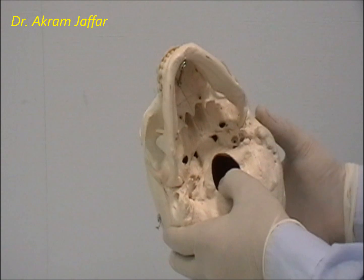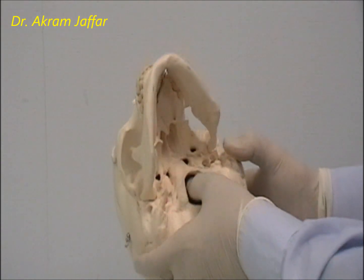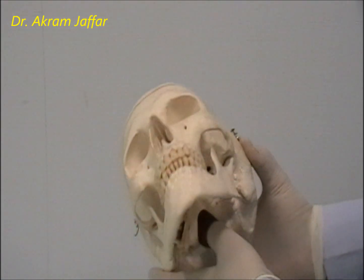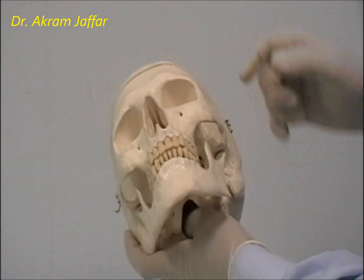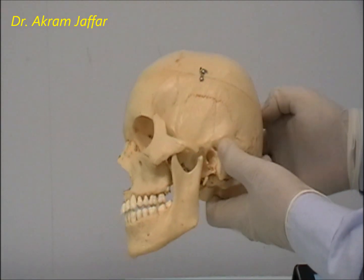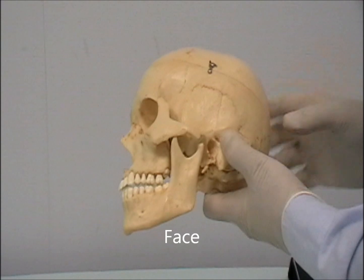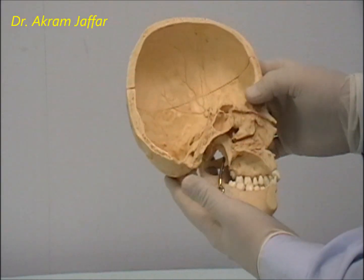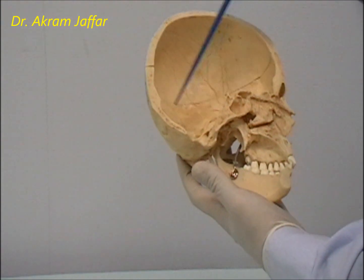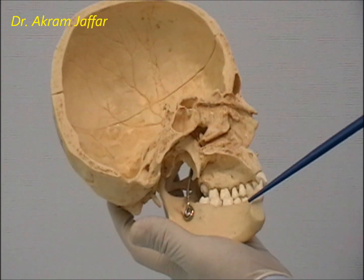This is an articulated skull. It's better to hold the articulated skull from the foramen magnum rather than from the orbits, because the bone on the medial side of the orbit is very thin and might break in a real skull. The skull consists of the cranium and the face. The cranium encloses the brain, and the face hangs down below it.